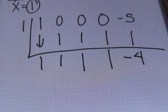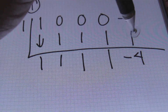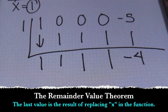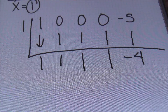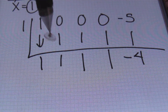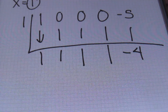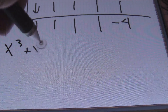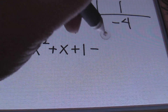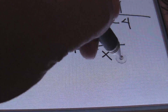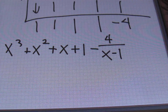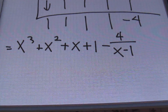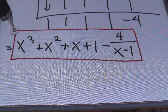There's something called the remainder value theorem, ladies and gentlemen. If you're ever doing that, all you have to do is use your synthetic division — that last value is going to be the result that you would have gotten if you were to plug in that value, in this case 1, into the original expression, a.k.a. the function. The answer to problem number 4 is x cubed plus x squared plus x plus 1 minus 4 over the divisor of x minus 1.